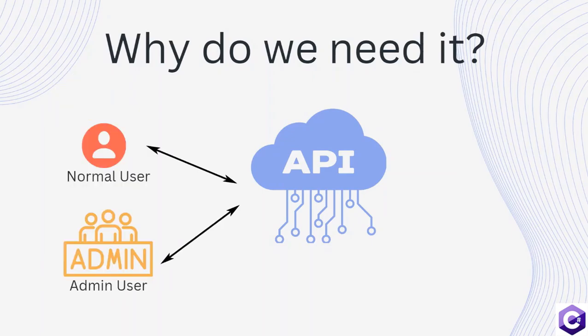Now let's understand why authorization is important. Let's say you trust some application and a particular type of user is authenticated. You have GET and POST resources where a few users can only read. For example, normal users come to your API, log in, and are able to get the resources. But you also have a particular type of user — the admin user — who is able to modify the data. That way, you are only allowing a certain set of users to modify or delete the data, while a normal user cannot do that. That is where authorization comes into picture.